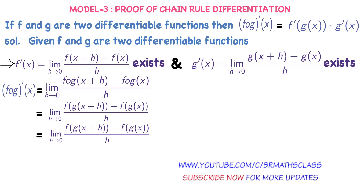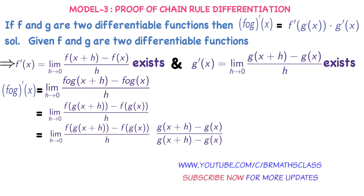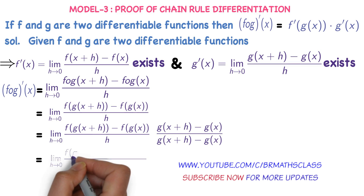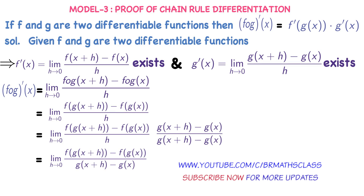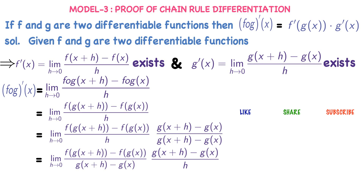Now I multiply the numerator and denominator by g(x+h) − g(x). This gives: limit h tends to 0 of [f(g(x+h)) − f(g(x))] / [g(x+h) − g(x)] · [g(x+h) − g(x)] / h. The terms are rearranged so that we can prove what we want.